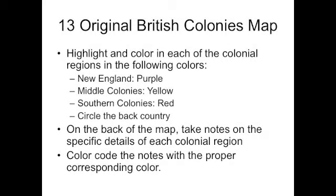Please follow these directions while taking notes on your colonial maps. Highlight and color in each of the colonial regions in the following colors: New England purple, middle colonies yellow, southern colonies red, and circle the backcountry. On the back of the map, take notes on specific details of each colonial region, and color code the notes with the proper corresponding colors.